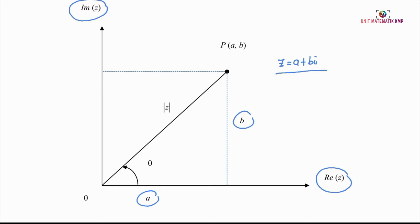With endpoint P at coordinates (A, B), we draw a line OP representing the complex number Z. The length of OP is the modulus of Z, denoted by R, and the angle of OP to the X-axis is theta, the argument of Z.